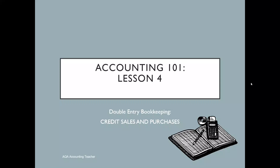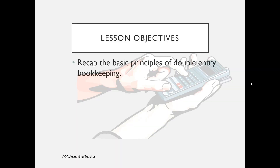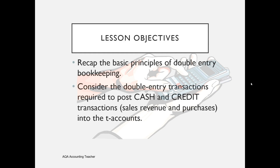Welcome to Accounting 101 Lesson 4, where we'll be looking at the double entry bookkeeping for credit sales and purchases. Previous sessions looked at the basic principles of double entry bookkeeping including the accounting equation and dealt with transactions regarding assets, liabilities, cash sales and purchases. This time we're going to recap those basic principles, test you to see if you've understood what we've learned so far, and consider what double entry transactions would be needed to post both cash and credit transactions.